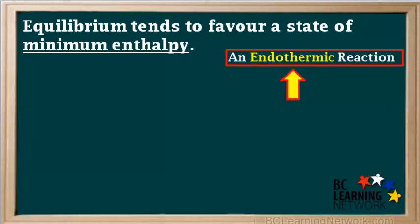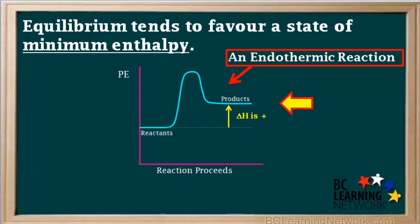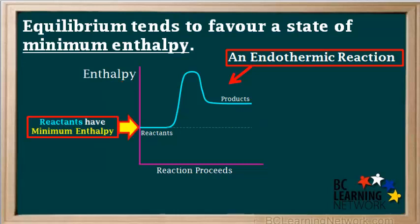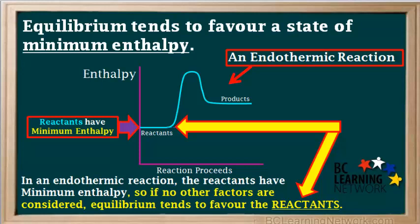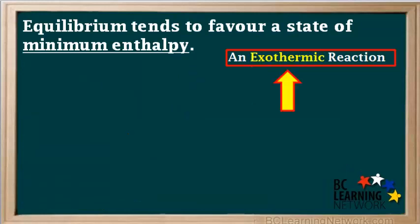Let's focus on an endothermic reaction. The potential energy diagram for an endothermic reaction looks like this. Delta H is positive, and the products have more potential energy than the reactants. If we change the title of the axis from potential energy to enthalpy, the graph will have the same shape. The reactants are lower in enthalpy than the products, so we can say that the reactants have minimum enthalpy. We can generalize and state that in any endothermic reaction, the reactants have minimum enthalpy. Since equilibrium tends to favor a state of minimum enthalpy, if just enthalpy is considered in an endothermic reaction, equilibrium tends to favor the reactants.